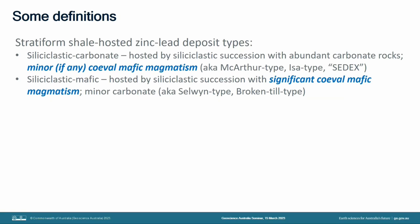I've divided the deposit types into two based on the general characteristics of the host successions. First, siliciclastic carbonate — these are deposits hosted by successions which contain siliciclastic rocks but also abundant carbonate rocks. If you go to HYC in the Northern Territory, you actually find that the dominant rock type is actually a dolostone. In contrast, siliciclastic mafic deposits are also hosted by siliciclastic-dominated sequences, but in this case they have coeval mafic magmatism. A good example is Broken Hill, which has mafic intrusions up to the stratigraphic position of the ore deposits.